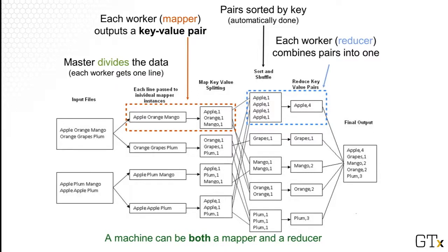So, for example, the reducer that handles the 'apple, one' key-value pairs will see four of them as input. And it can easily add the four ones, and we get our final output.